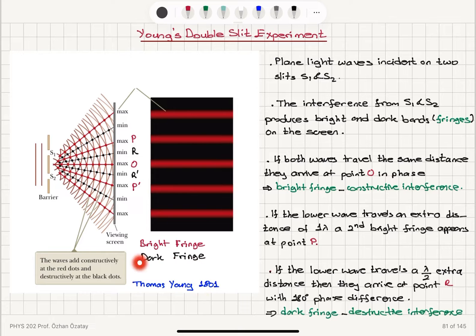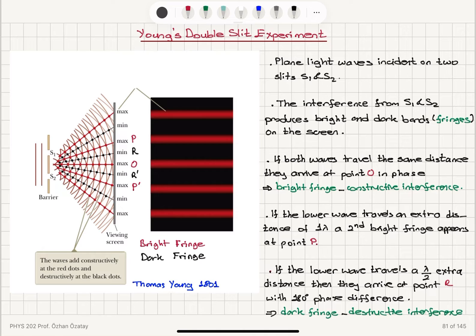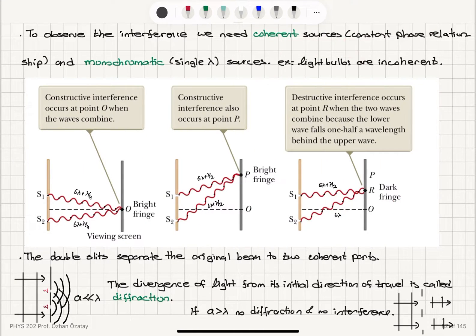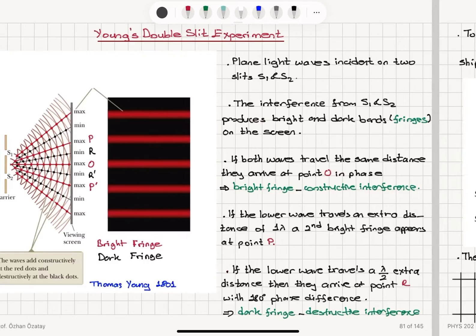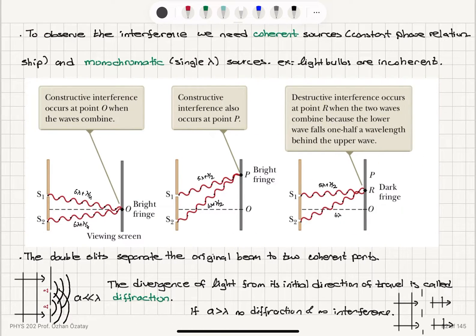This experiment was performed by Thomas Young in 1801, and it clearly demonstrates the wave nature of light. It is also a direct proof of Huygens' principle. To observe the interference pattern properly, we need coherent sources — meaning they have a constant phase relationship — and a monochromatic, single-wavelength source. Light bulbs are incoherent, so they won't work. The source must be coherent and single-wavelength to see this effect clearly.